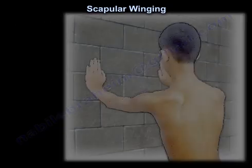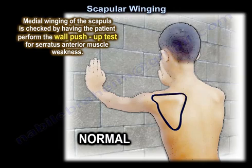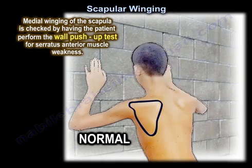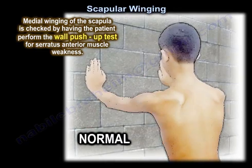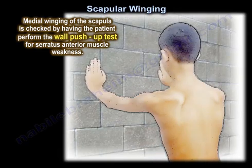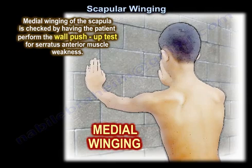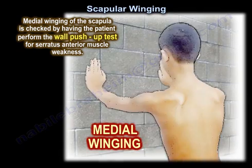Medial winging of the scapula is checked by having the patient perform the wall push-up test for serratus anterior muscle weakness.